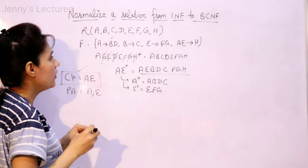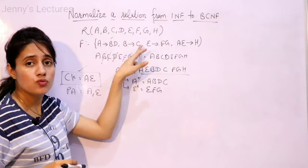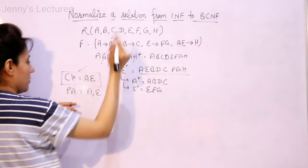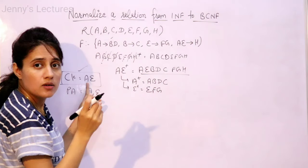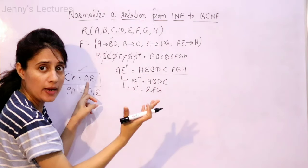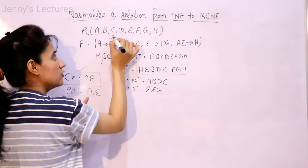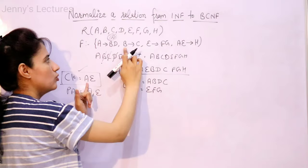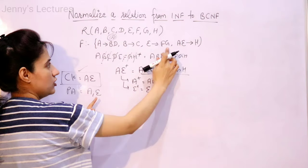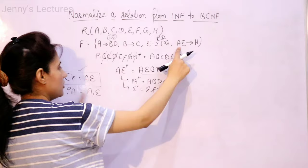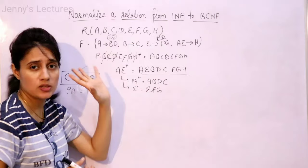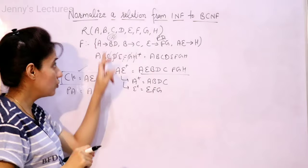Now find out which functional dependency is creating a problem — which functional dependency represents partial dependency. Partial dependency means a proper subset of the candidate key drives a non-prime attribute. A is a proper subset of AE and B, D are non-prime attributes, so A→BD is partial dependency. E is a proper subset and F, G are non-prime attributes, so E→FG is partial dependency. These two functional dependencies are creating the problem; because of these two, this relation is not in second normal form — it is in first normal form.